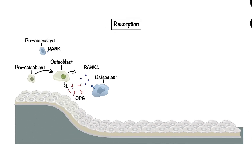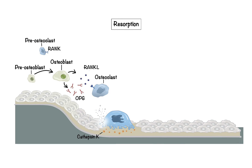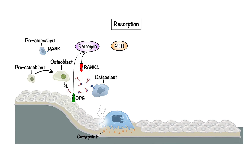Resorption follows activation, and it is the phase where osteoclasts break down bone tissue by secreting enzymes and acids, including cathepsin K. As a result, calcium and phosphate are released into the bloodstream, contributing to the body's mineral balance. Key hormones, such as estrogen and parathyroid hormone, PTH, have a significant impact on bone health by controlling the functions of osteoblasts and osteoclasts. Estrogen reduces the expression of RANKL while increasing the production of OPG, thereby inhibiting osteoclast activity.